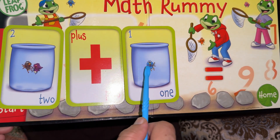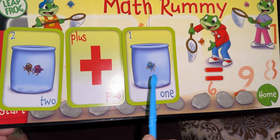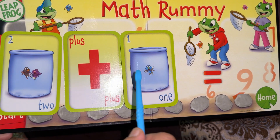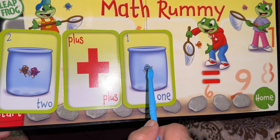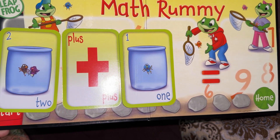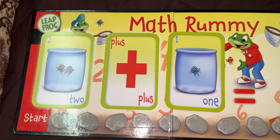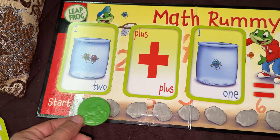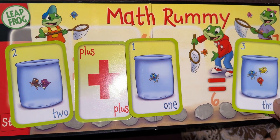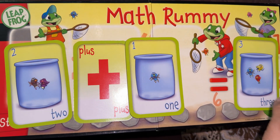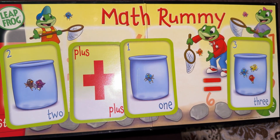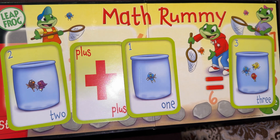Let's count: one, two, three. Two plus one is three! How many mosquitoes do we have now? One, two, three — so when we add two mosquitoes and one mosquito, we have three in total. With LeapFrog, two plus one equals three. Let's count the three mosquitoes: one, two, and three. We've done the second question!